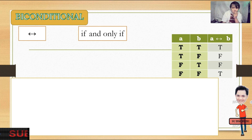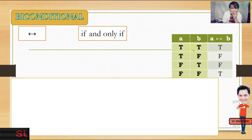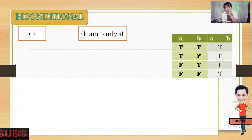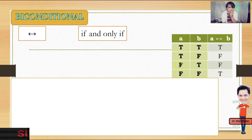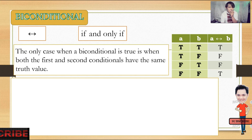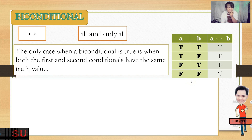What can you notice about the biconditional truth table? It will only become true if both values are the same. True and true is true. False and false is true — even if both are false, it's still true. If they have different values — true-false or false-true — that is false. It's like the rule of signs in multiplication: same signs give positive, different signs give negative. The only case when a biconditional is true is when both propositions have the same truth value.